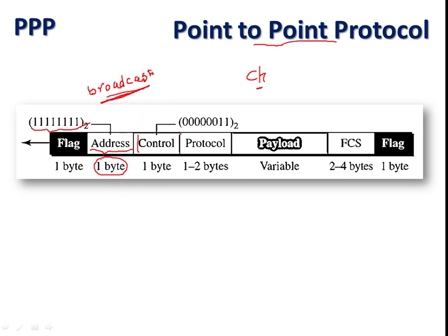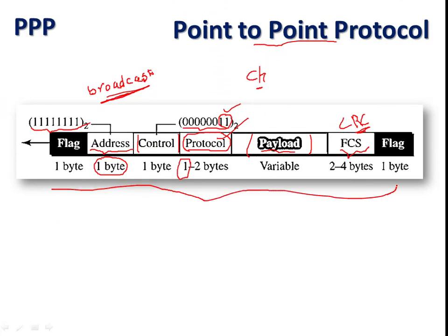The address field is one byte in size and is constant — fixed with all ones, meaning all eight bits are ones, which represents broadcast addressing. The control field is one byte and is similar to the unnumbered frame control field of High-Level Data Link Control (HDLC). The protocol field is one to two bytes and defines what data is carried in the frame — either user data or other information. The payload is the user data collected from the network layer. The FCS (Frame Check Sequence) uses error detection techniques like CRC.